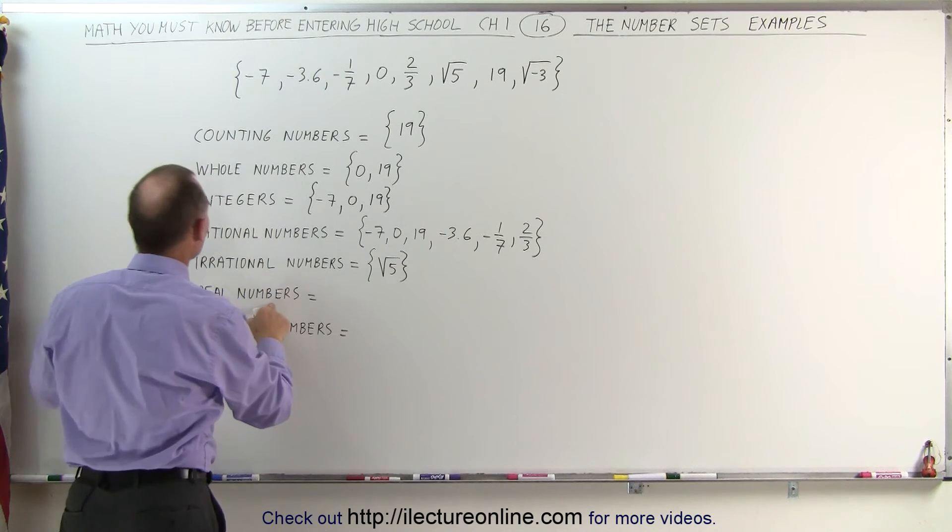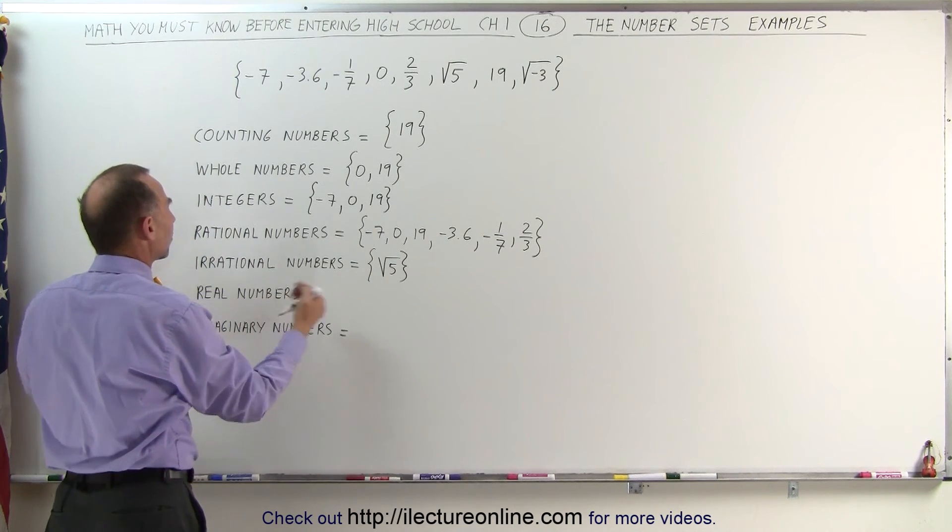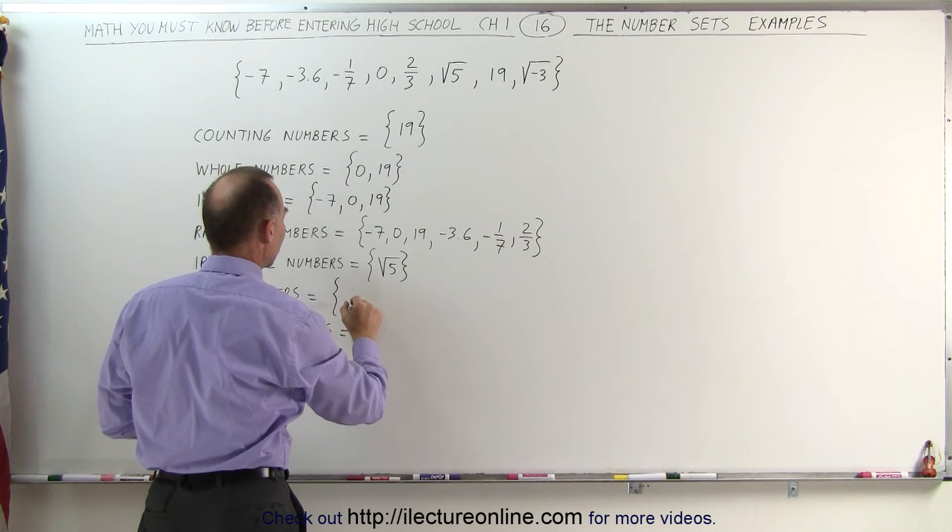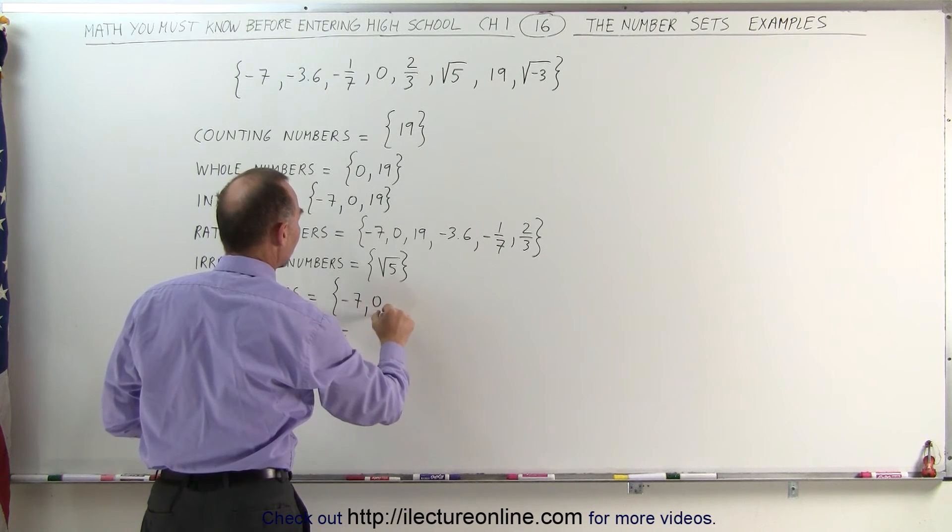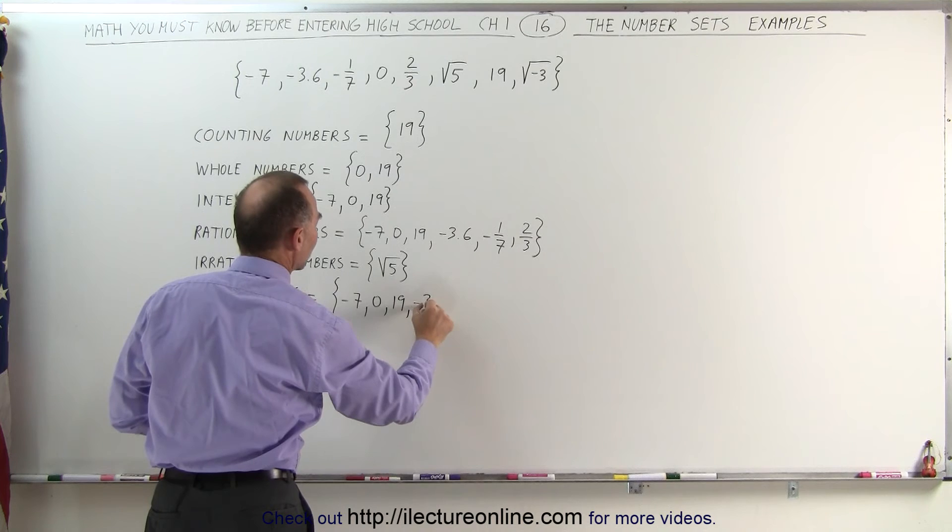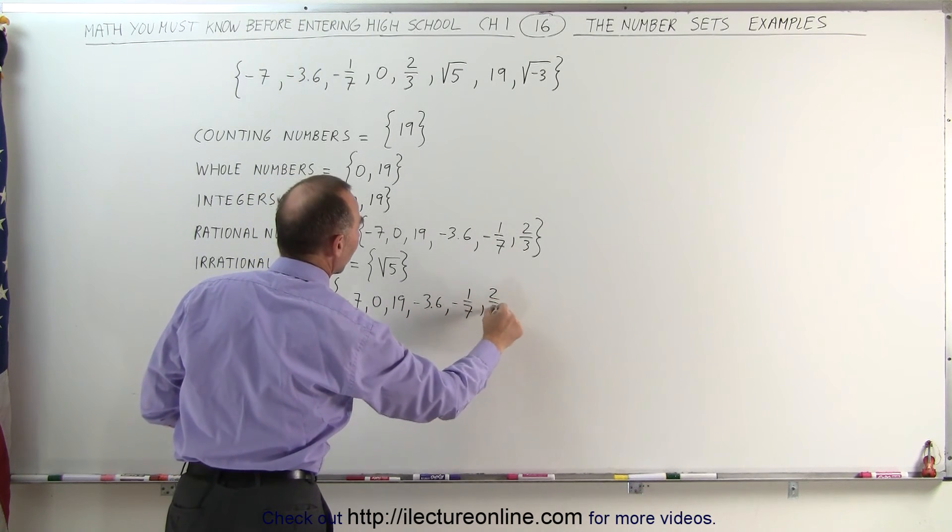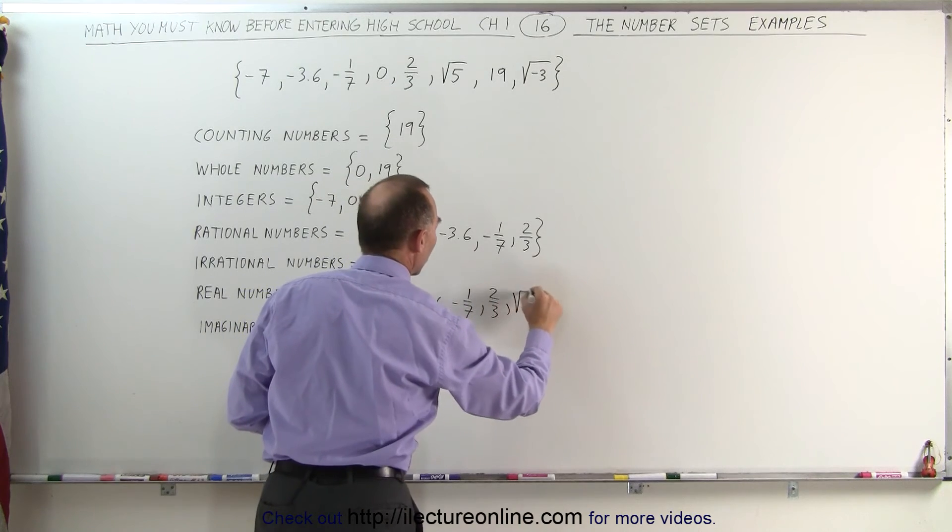The real numbers are all the rational numbers and all the irrational numbers combined. So we simply have to sum up these two and we get the following: minus 7, 0, 19, minus 3.6, minus 1 over 7, 2 thirds, and also the square root of 5.